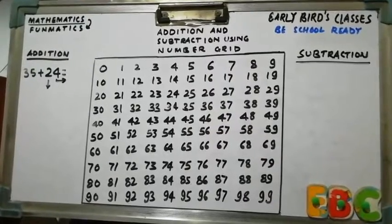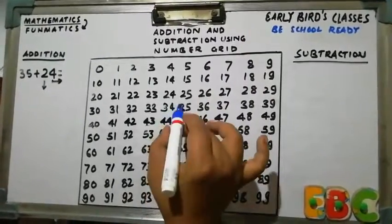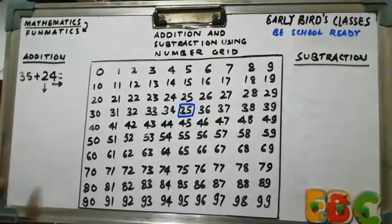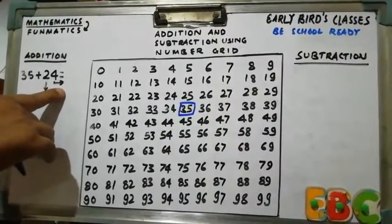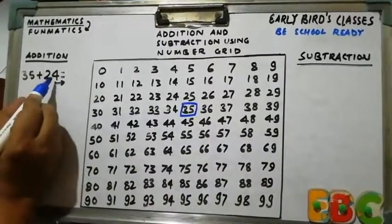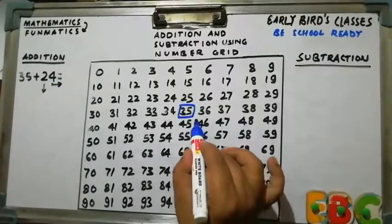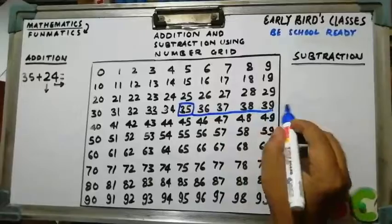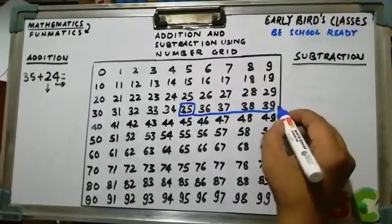These are three steps. So first step is locate 35 on number grid. So here is 35. Now we have to traverse horizontally towards right. So how many? Four places. First, second, third, fourth. We reached at 39.